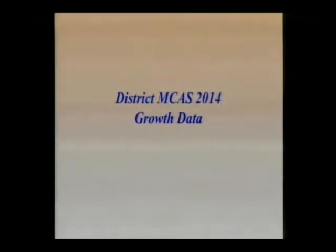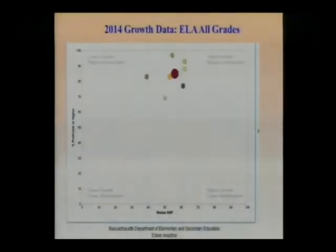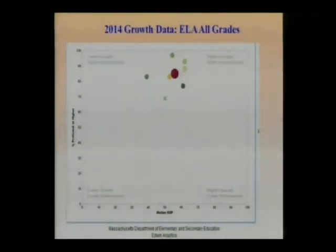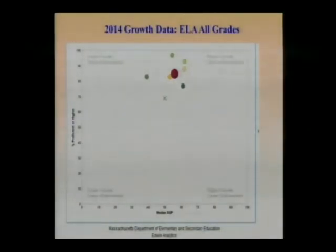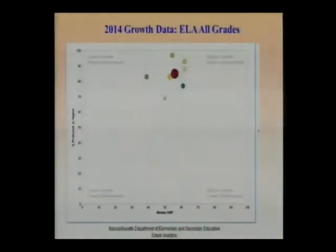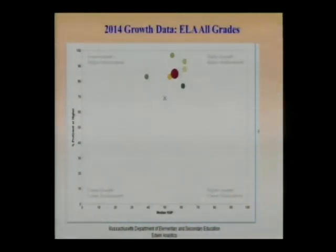Also looking at growth data — that was another metric the school committee set a goal around. These are our bubble charts. What you're looking for is all the bubbles in the upper right-hand quadrant, which would indicate schools with high growth and high achievement. Just about all of the Arlington grades will show they are in either medium or high growth and high achievement. There's one outlier there for ELA — the dot on the far left is sixth grade for ELA, indicating that while they have high achievement, they had low growth this year.